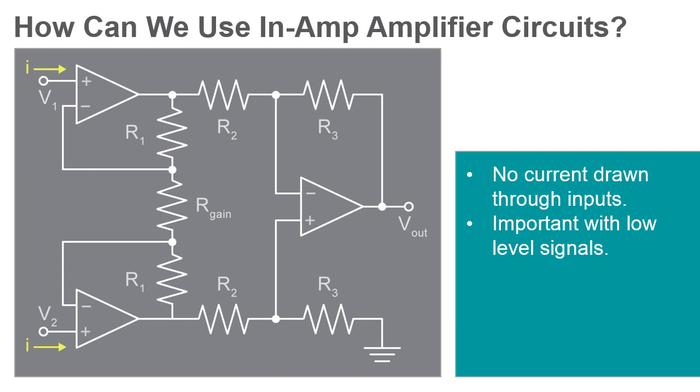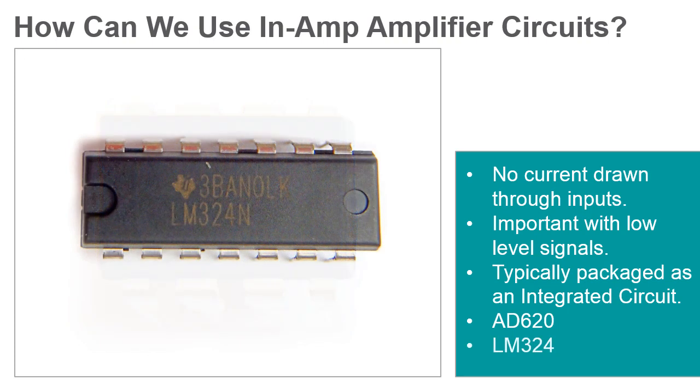Instrumentation amplifiers can be composed of separate discrete op-amps, but they are more typically packaged together as an integrated circuit such as the AD620 or the LM324.